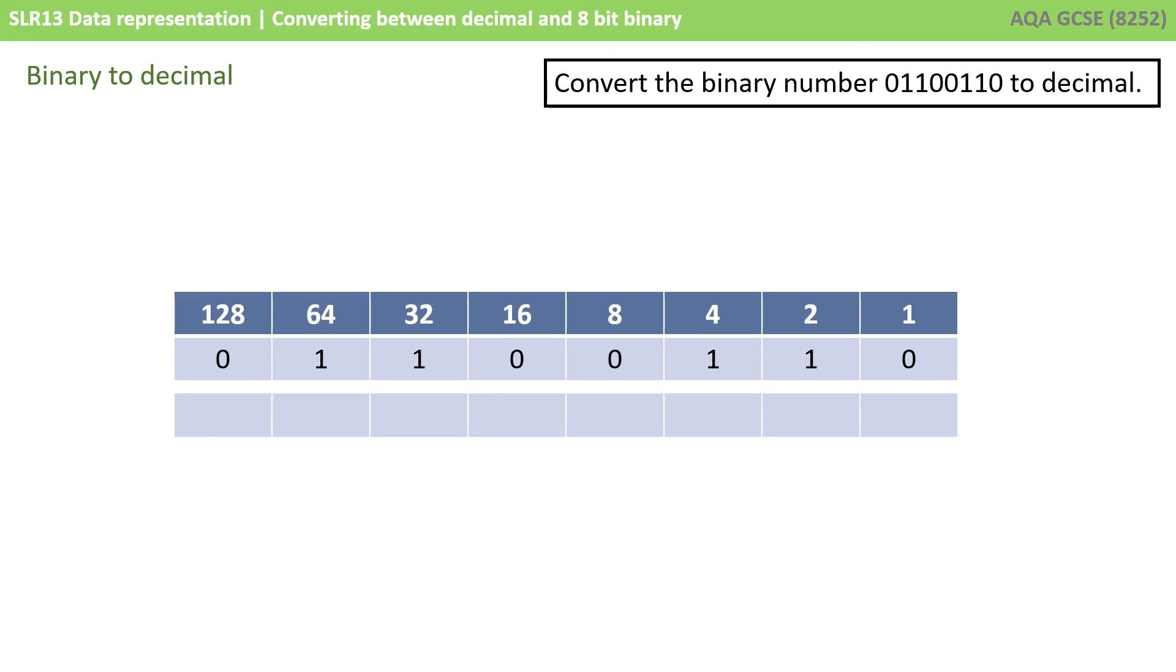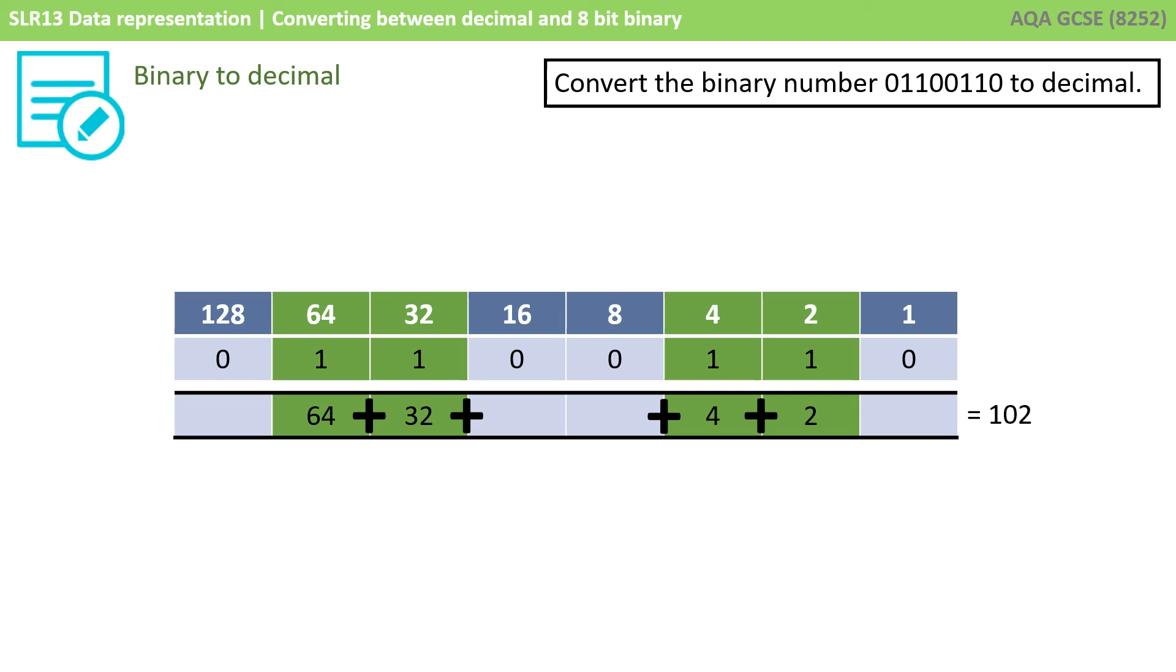Make sure you do this bit accurately. And then just add up any columns that have a 1 in it. So we have a 64 plus a 32 plus a 4 and a 2. So you now know that the binary number 01100110 is the decimal number 102.